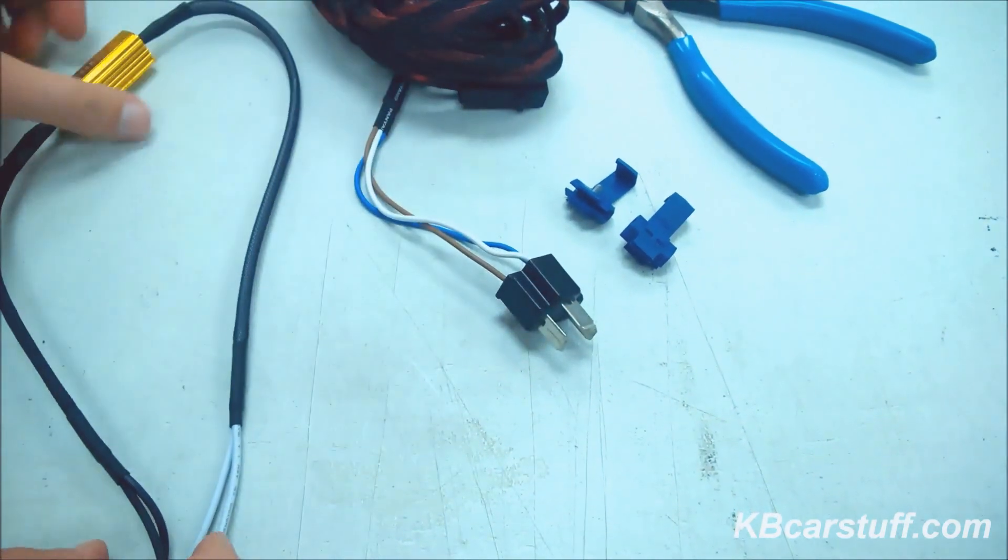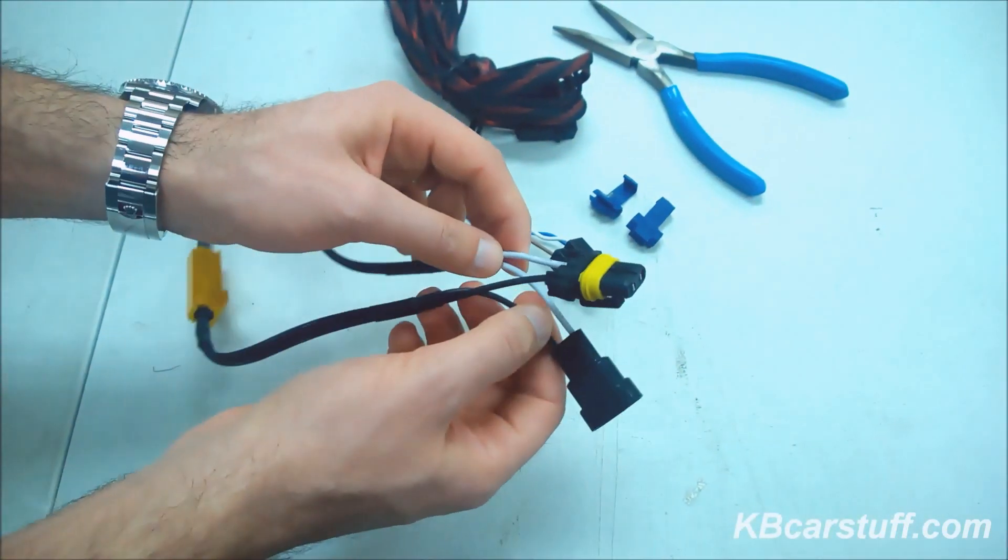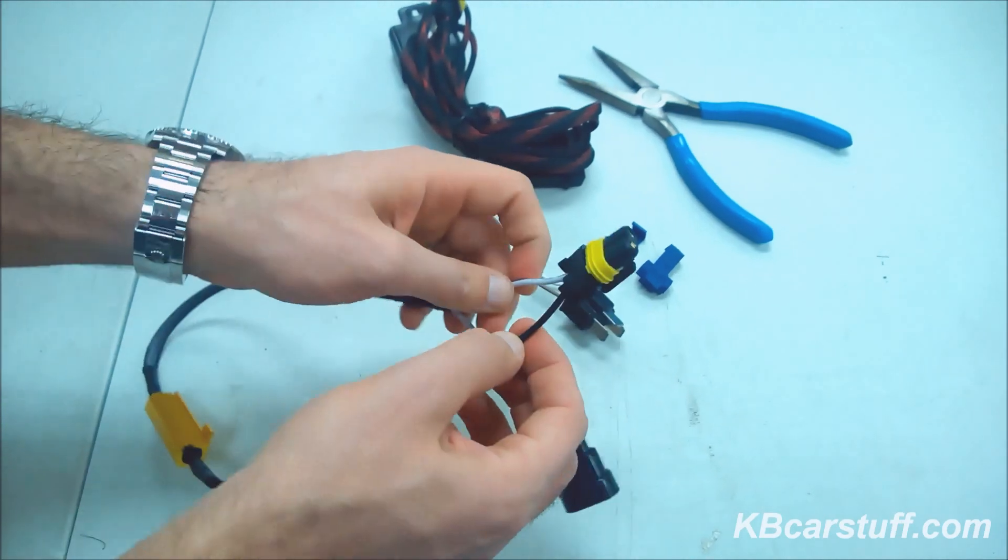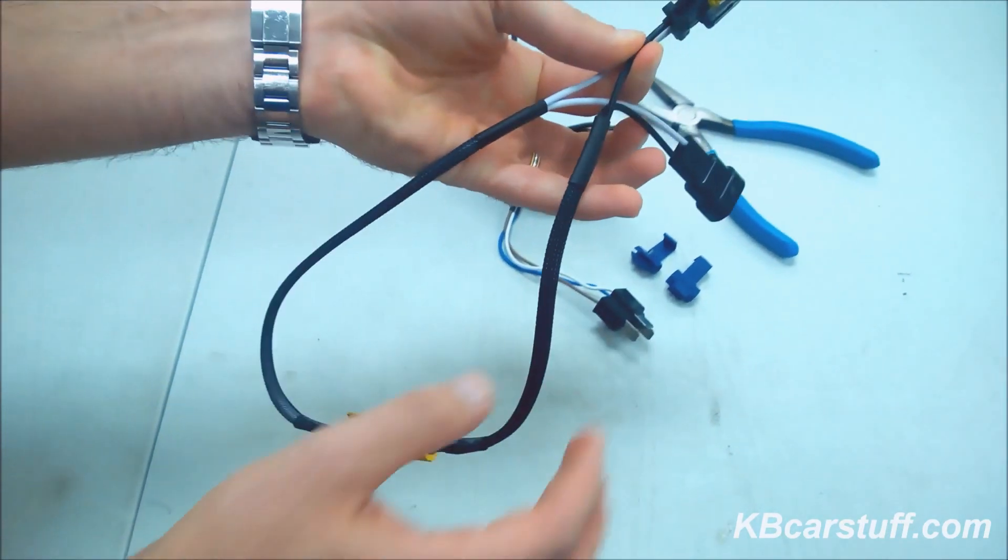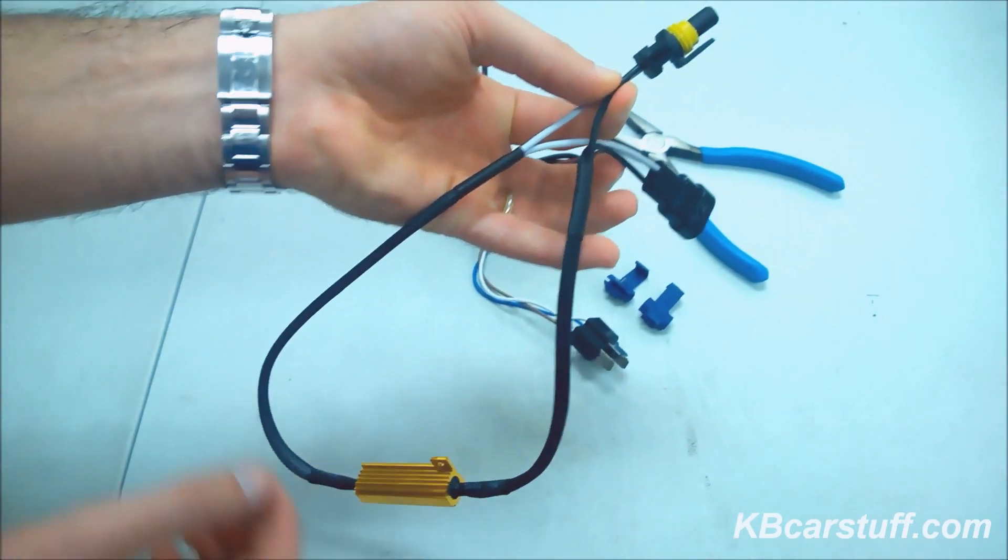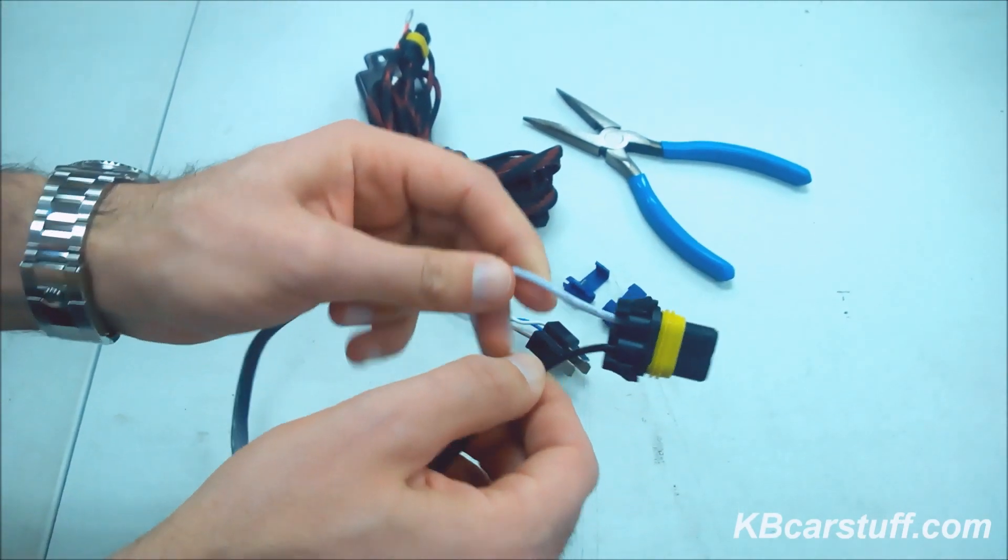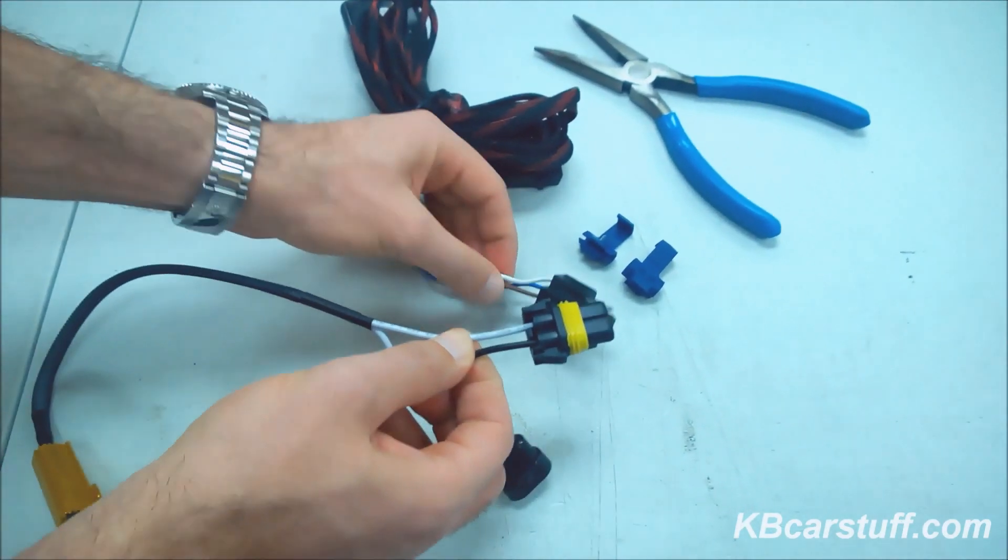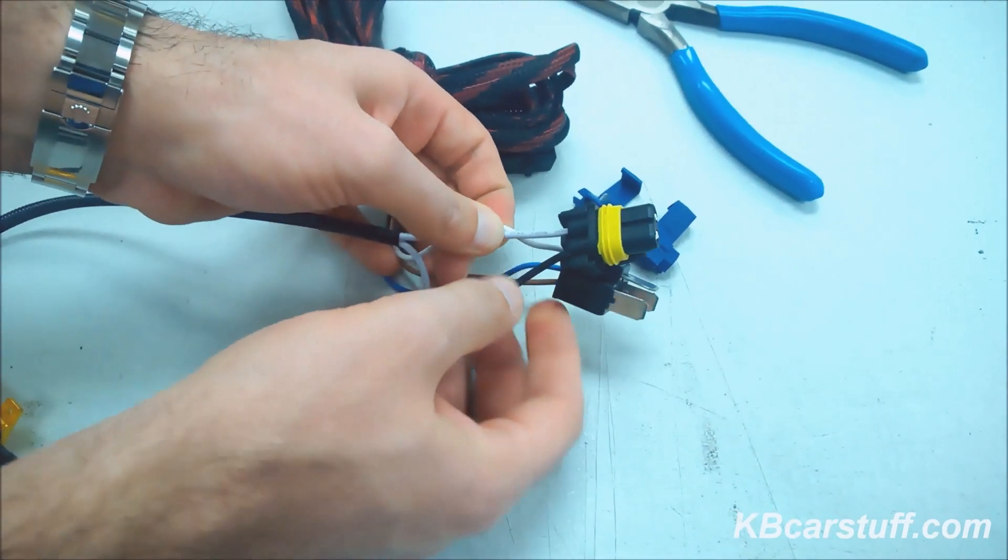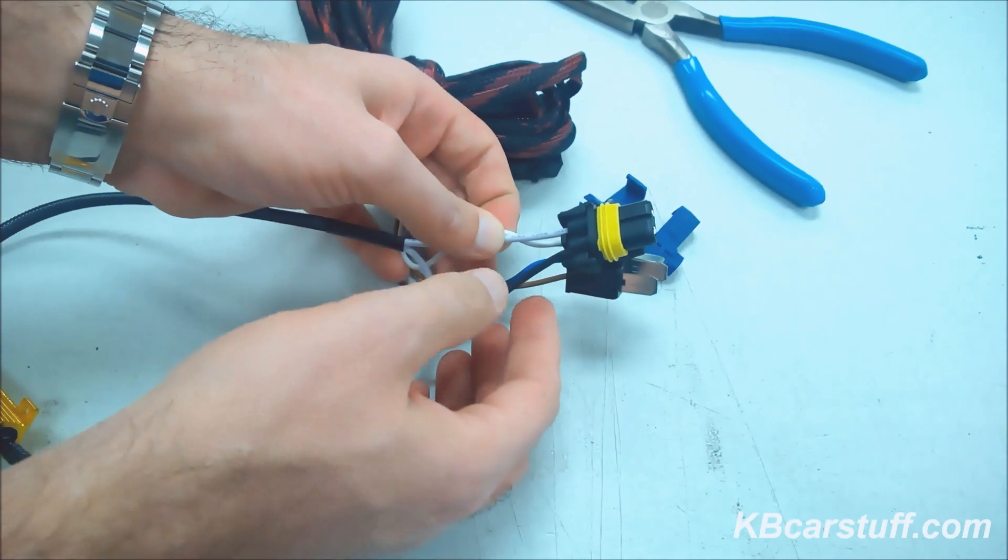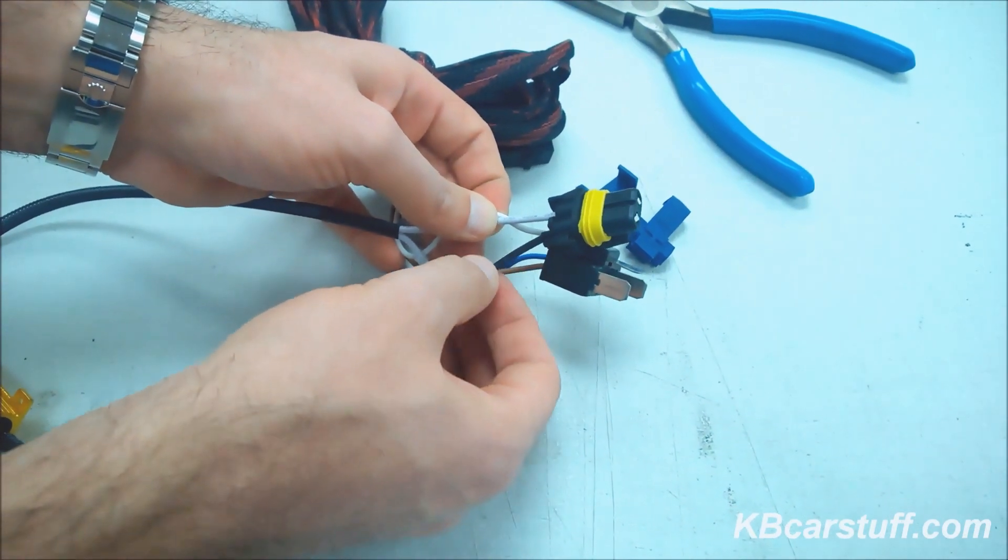So if you take a look at the resistor, essentially all you would need to do is you would need to take, just to show you here, there's a black wire and a white wire coming out of each end. You need to put these two wires across, connect them to the circuit. So white to white, which would be low beam to power, and ground to ground.